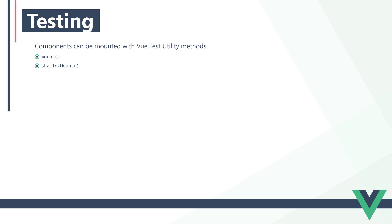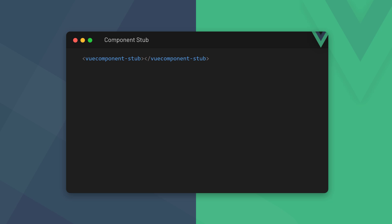The mount method will mount the component with any child components included. The shallow mount method, on the other hand, will replace child components with a stub. A stub is basically a fake object that acts as a stand-in for a real one. In most cases, we should try to use the mount method first. If there are any complications, we can try using shallow mount.